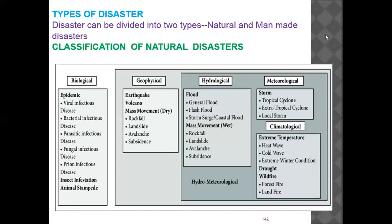Meteorological disasters are those related to climatic or weather conditions. These include tropical cyclones, which occur in tropical regions, and extra-tropical cyclones, which are more harmful due to extremely low pressure and cover a wider area. Local storms can also be natural disasters. Climatic conditions such as extreme heat, extreme cold, drought, wildfire, forest fire, and land fire are all examples of meteorological natural disasters.